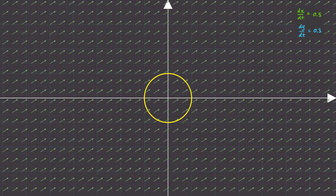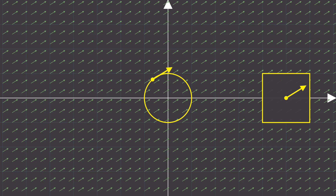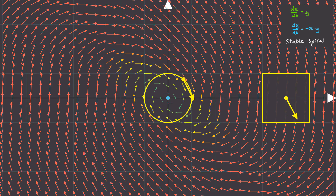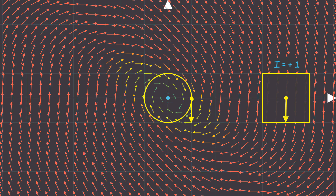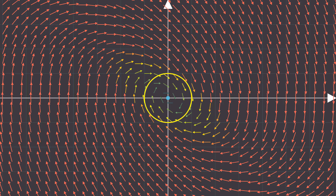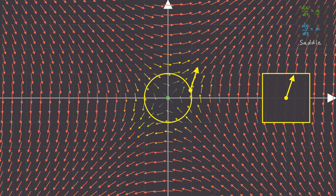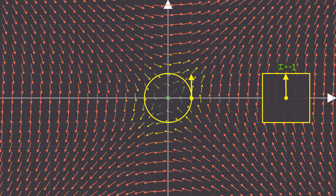Now let's do the same with another vector field given by this equation. As you can see, the vector field is constant and points in one direction, so the index is equal to zero. So that means they're not all plus one. Let's try again with another vector field corresponding to a single stable spiral fixed point. In this case, the vector field still results in one full counterclockwise rotation, so its index is equal to plus one.